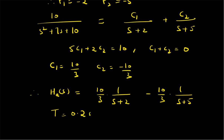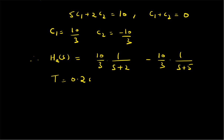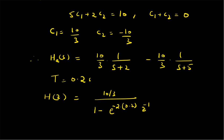Given T = 0.2 seconds, we can write H(z) in the summation form. The first term is (10/3) / (1 - e^(p1·T) · z⁻¹), where p1 = -2 and T = 0.2, giving e^(-2×0.2) = e^(-0.4). The second term is (-10/3) / (1 - e^(-5×0.2) · z⁻¹).